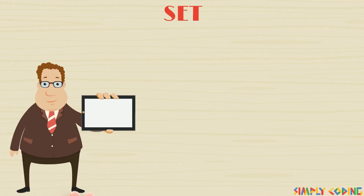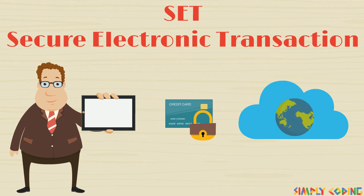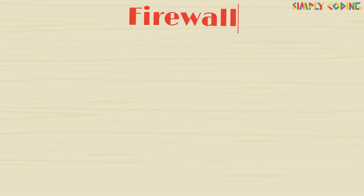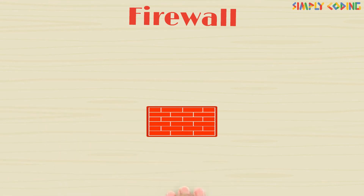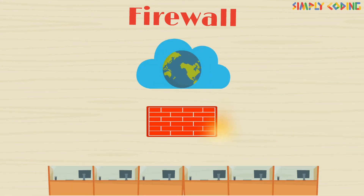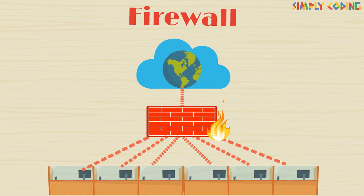SET — Secure Electronic Transaction — is a communication protocol standard for securing credit card transactions over the network. Firewall is a network security system that monitors and controls network traffic. It establishes a barrier between the internal network and internet based on predetermined security rules.